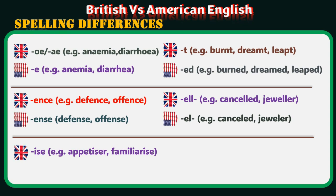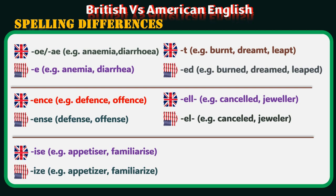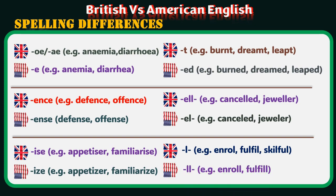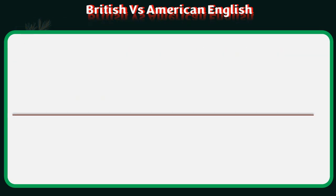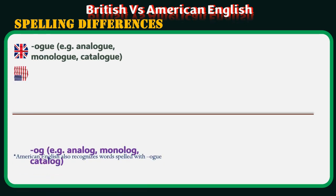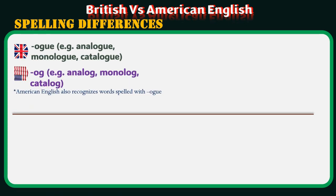British ends with ISE — examples: appetiser, familiarise, organise. American ends with IZE — examples: appetizer, familiarize, organize. British ends with single L — examples: enrol, fulfil, skilful. American ends with double LL — examples: enroll, fulfill, skillful. British ends with OGUE — examples: analogue, monologue, catalogue. American ends with OG — examples: analog, monolog, catalog. Note that American English also recognizes words spelled with OGUE.